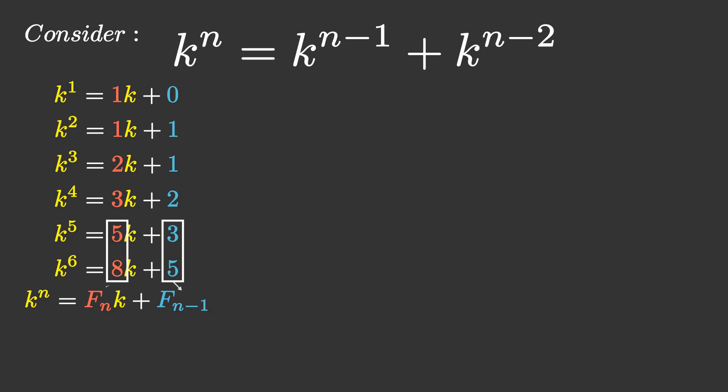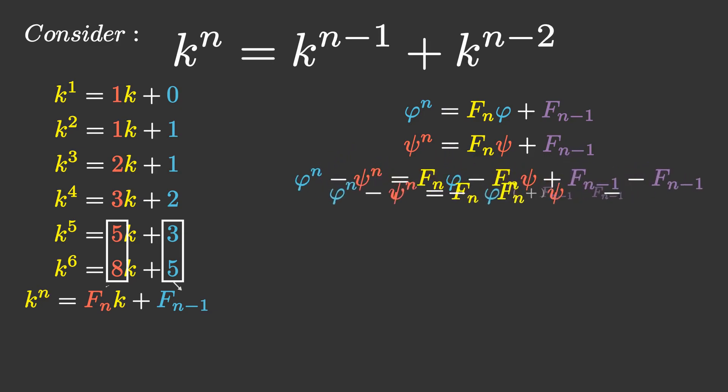Now this is a very useful formula because we know what the values of k are. Plugging these two values of k in, we get a pair of simultaneous equations, which we subtract one from the other to get an equation with F(n) and two known constants. We can then do some rearranging to get F(n) in terms of phi and psi, and plugging their values back in, we can produce Binet's formula.